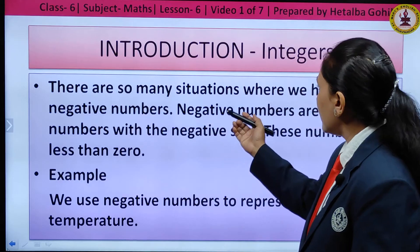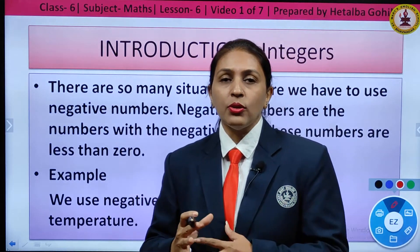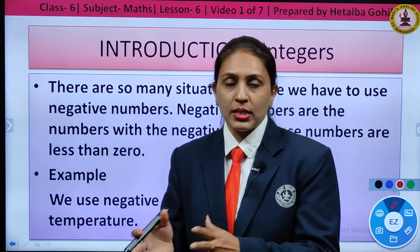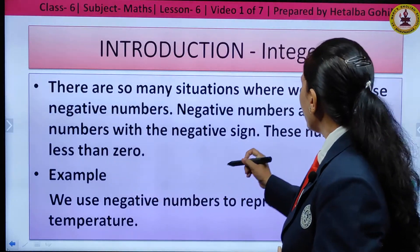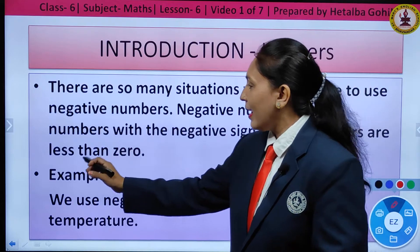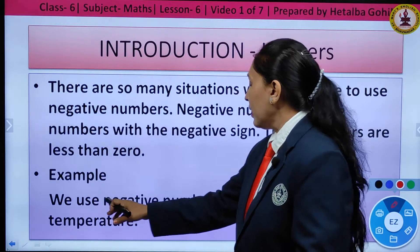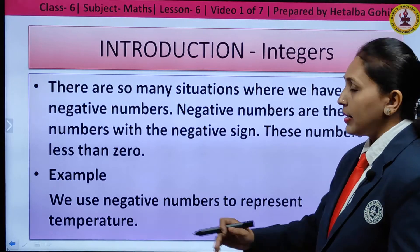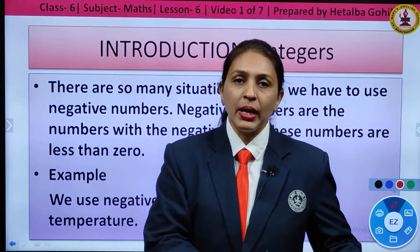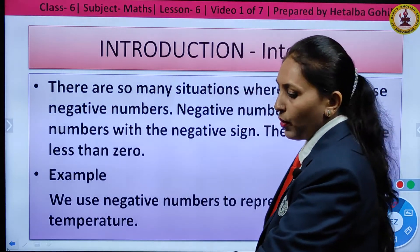Many times you see there are situations where we need to use negative numbers — especially when you talk about temperature. Temperature can be positive and negative. Negative numbers are numbers with a negative sign; these numbers are less than zero. For example, we use negative numbers to represent temperature and also to indicate below and above.